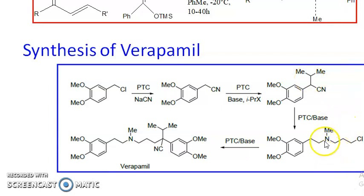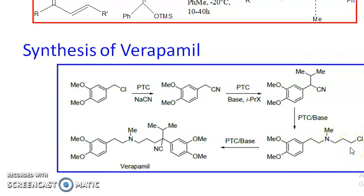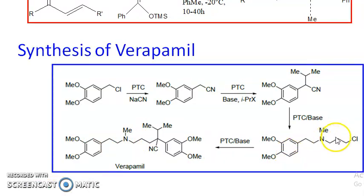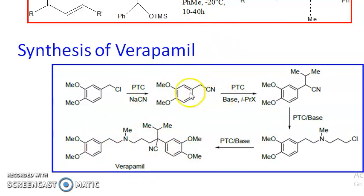Then, to the nitrogen of the cyanide group you are introducing an alkyl group, so this becomes N-alkylation. And here again you are replacing the chlorine — this chlorine is replaced by the compound, again an N-alkylation — and you get verapamil. So this is a synthesis of a natural product where at every stage you are using PTC.